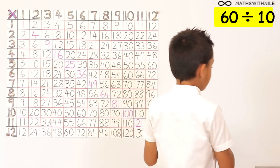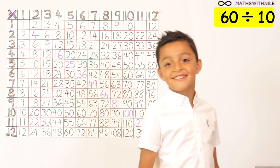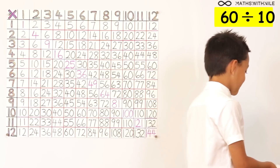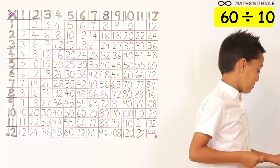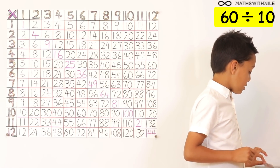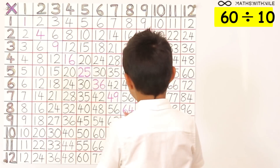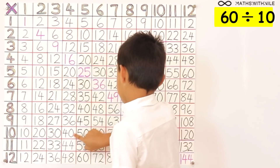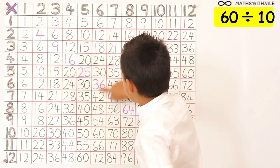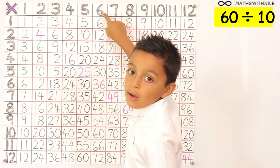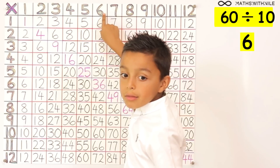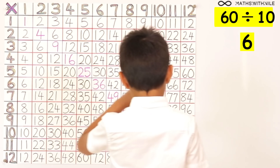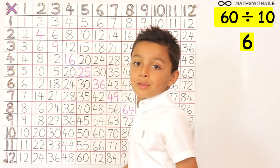60 divided by 10. Another division. If we go to our 10 times table we can find 60, and then we go across to 6. So the answer is 6. 60 divided by 10 equals 6.